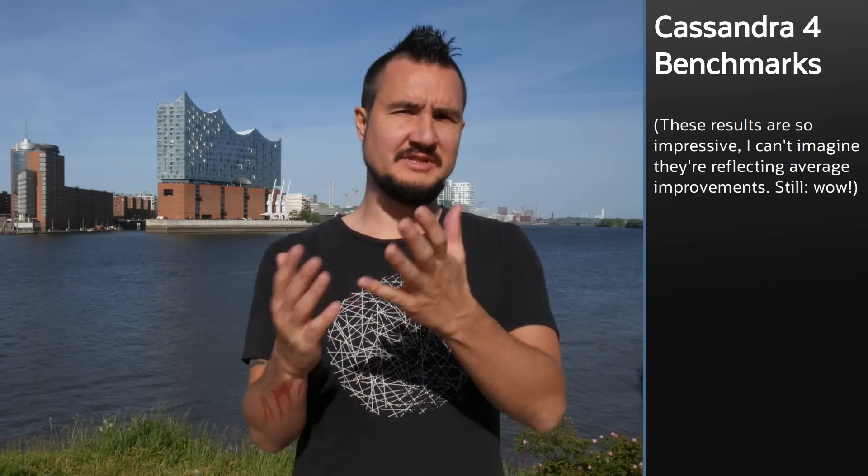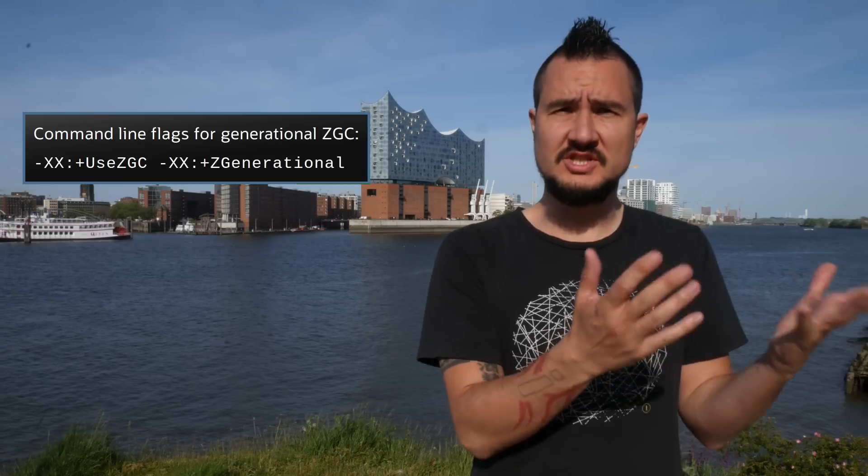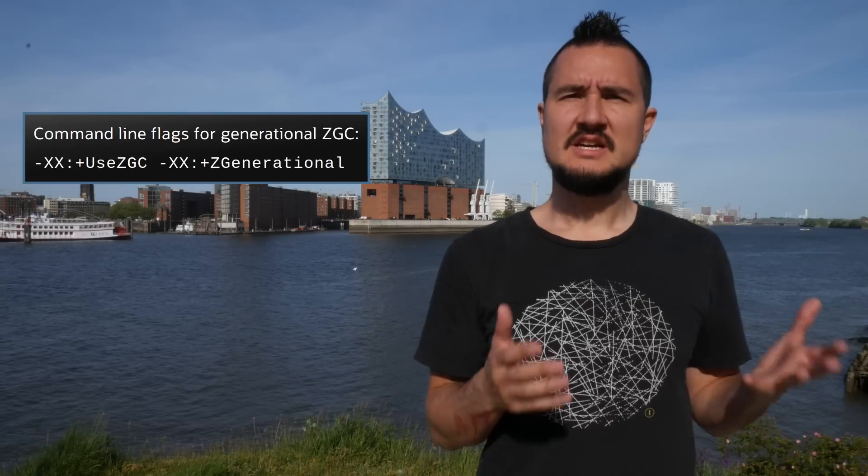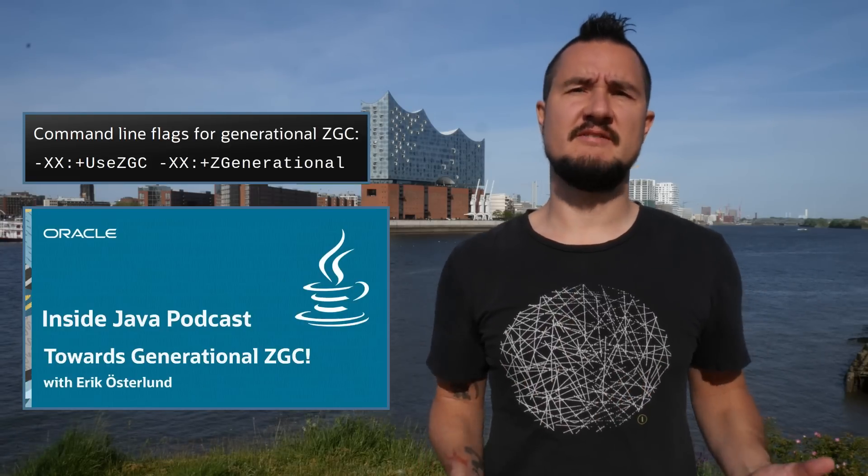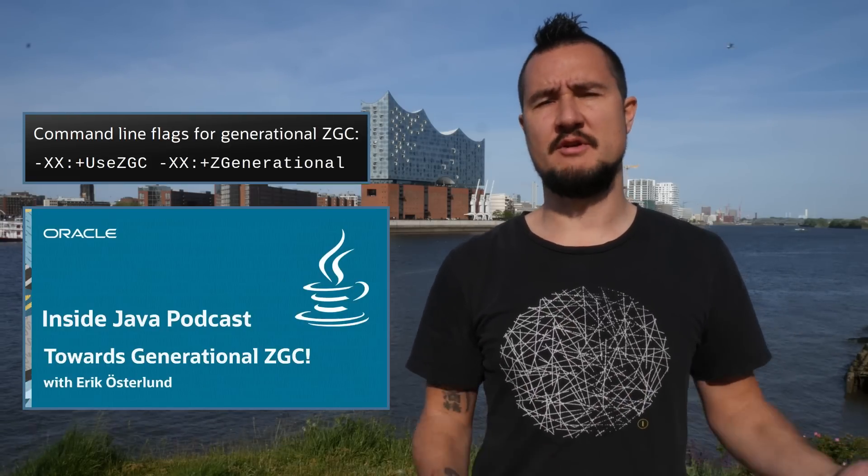In a probably not representative case, Cassandra 4 showed four times the throughput on Generational ZGC compared to ZGC with a fixed heap, or a quarter of the heap size on Generational ZGC compared to ZGC with stable throughput. If you want to give Generational ZGC a try on your workload, download a JDK 21 early access build and launch it with -XX:+UseZGC -XX:+ZGenerational. For more details, check JEP 439 or Inside Java podcast number 24 with Erik Osterlund.